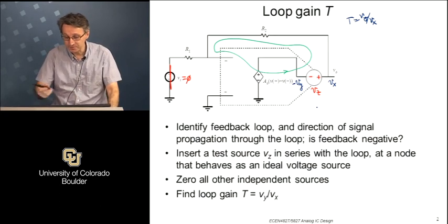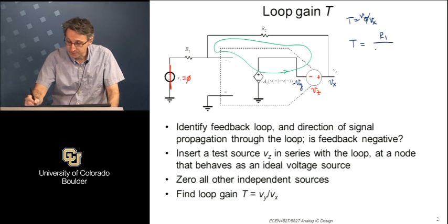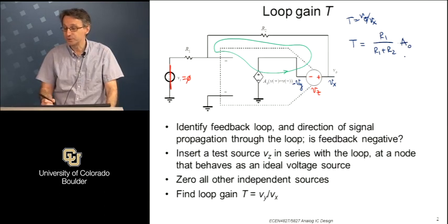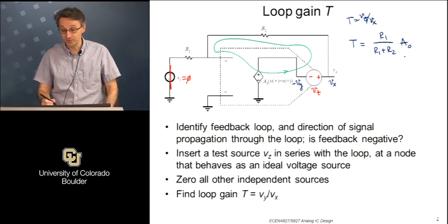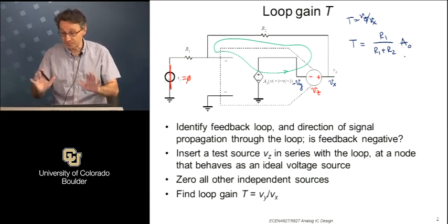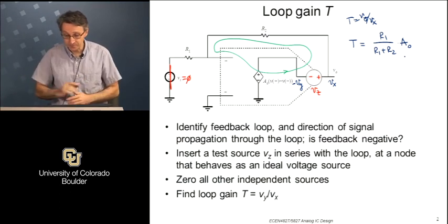The meaning of that response is the total gain the signal experiences as it travels around the signal path through the entire loop - that's the meaning of the loop gain. We found the loop gain here is very simple: it's equal to this voltage divider R1 over R1 plus R2, times A_0. That was the loop gain for this particular example - just a summary of what we did last time.